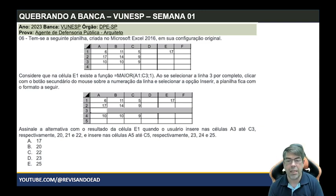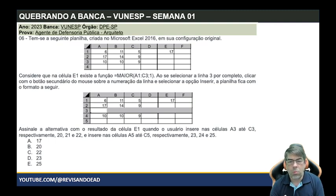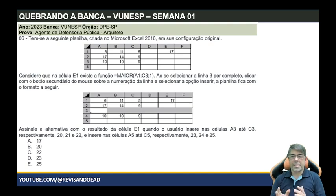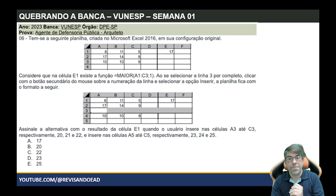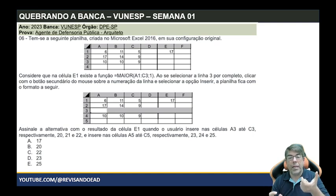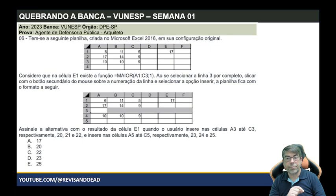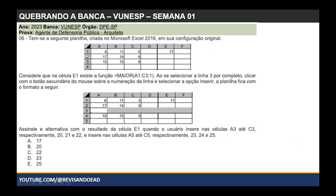Pense na seguinte planilha no Excel 2016 — não interessa a versão, isso funcionaria em qualquer versão, da mais pré-histórica às mais atuais. Ele montou uma planilhinha e fala o seguinte: considere que na célula E1 existe a função MAIOR(A1:C3; 1). Você sabe que existe a função MAIOR e a função MÁXIMO. O MÁXIMO compara tudo que você colocar dentro do parênteses. O MAIOR não — ele tem dois argumentos: o intervalo e a posição. O intervalo ali é A1 até C3.